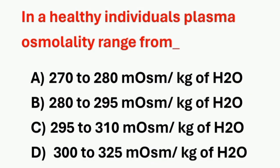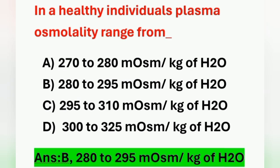Next question: Plasma osmolality in a healthy individual is? Options: A) 270–280 milliosmol per kilogram of water, B) 280–295 milliosmol per kilogram of water, C) 295–310 milliosmol per kilogram of water, D) 300–325 milliosmol per kilogram of water. Plasma osmolality in a healthy individual is 280–295 milliosmol per kilogram of water. Option B is the correct answer. This is the normal plasma osmolality.